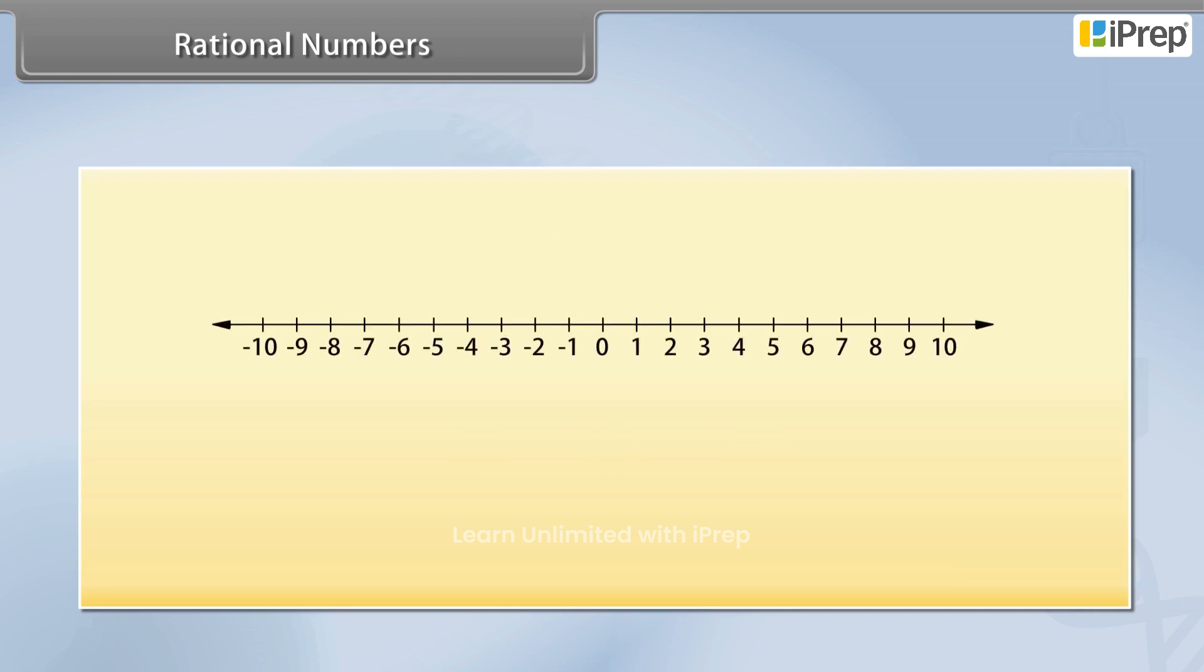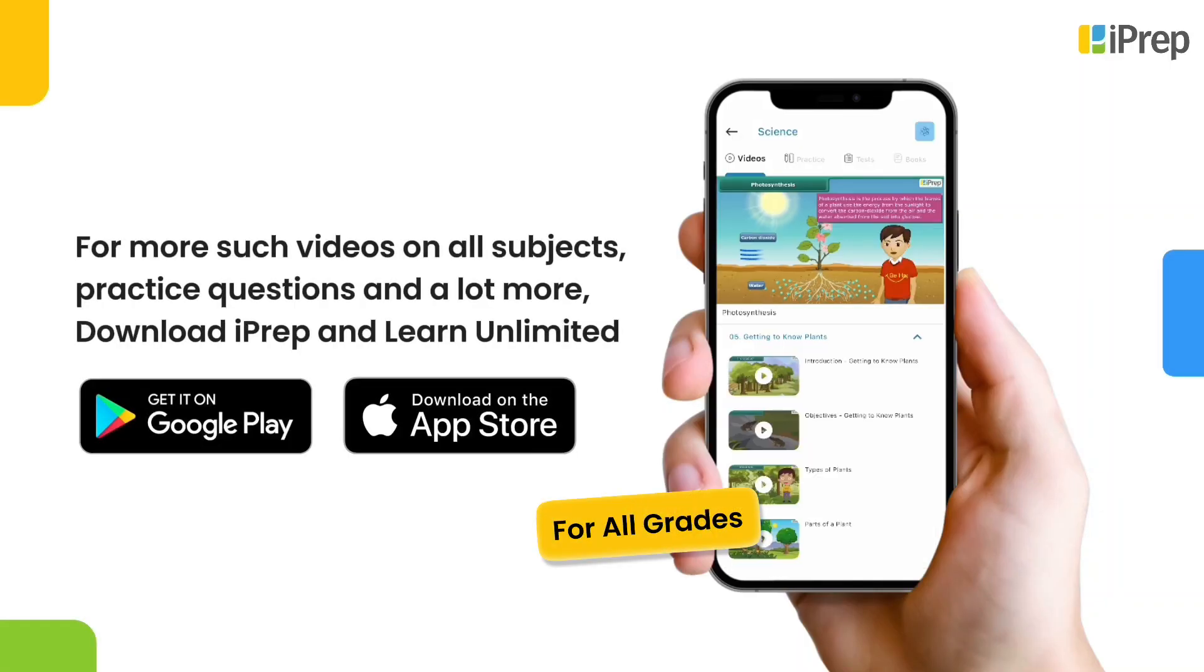Therefore, we can say that the rational numbers include natural numbers, whole numbers and integers.